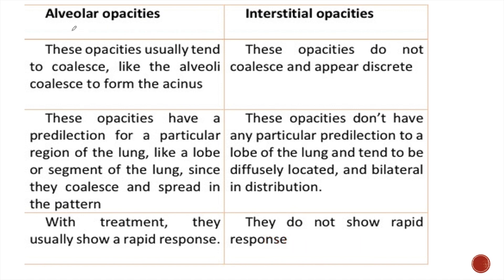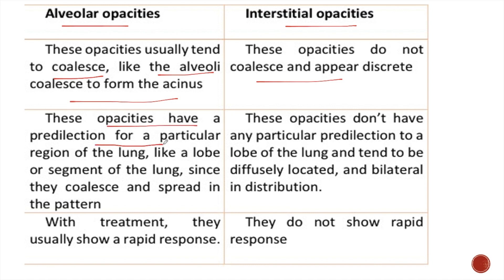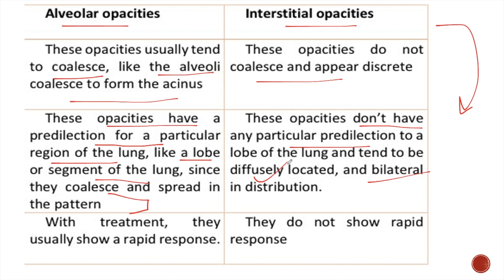The difference between alveolar opacities and interstitial opacities can be seen in this table. Alveolar opacities tend to coalesce, while interstitial opacities do not coalesce and appear discrete. Alveolar opacities have a predilection for a particular region of the lung, like a lobe or segment, since they coalesce and spread in that pattern. But interstitial opacities do not have any particular predilection to a single lobe or segment and tend to be bilateral and diffuse, involving both lungs.